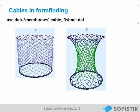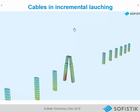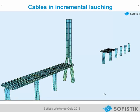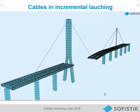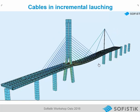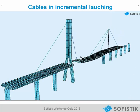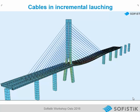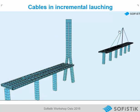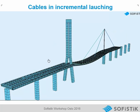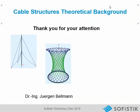There is also a nice example in the membranes folder called cablefishnet, where we have a starting system and by activating the dead load we get the deformed shape. We can also combine cables including incremental launching. Here we see a cable-stayed bridge that during erection uses incremental launching, a help cable assisting the bridge to reach the other side, and a help pylon with help cables to cross the river. This was an overview of cable structures and theoretical background. Thank you for your attention.